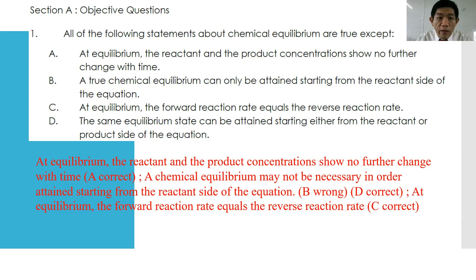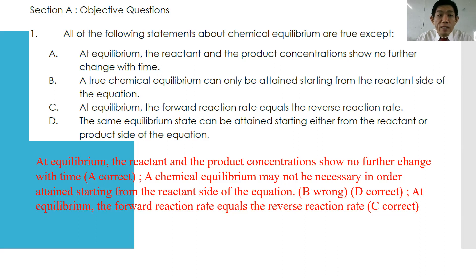Statement C is true. Finally, statement D: the same equilibrium state can be attained starting from either the reactant or product side, because it is a reversible reaction — so it can occur from whichever side we like. Therefore, the answer which is incorrect is B.